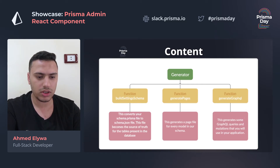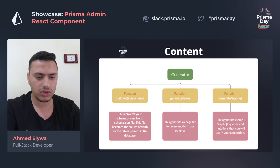The first part of the package is the generator. It contains three functions. First, the build settings schema — this converts your schema.prisma file to a schema.json file, which becomes the source of truth for the tables in your database. Second, the page generator, which generates a page file for every model in your schema. Third, the GraphQL generator, which generates GraphQL queries and mutations that you will use in your application.